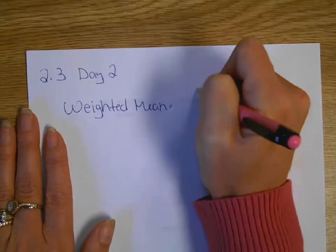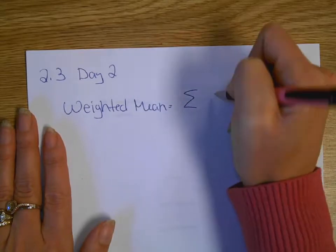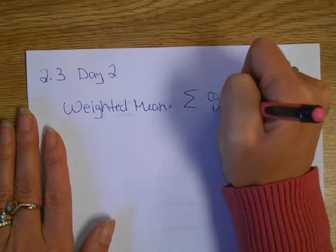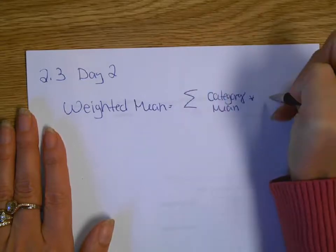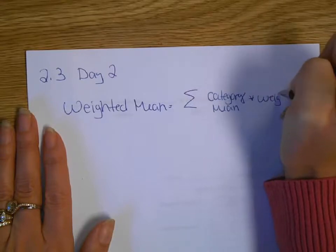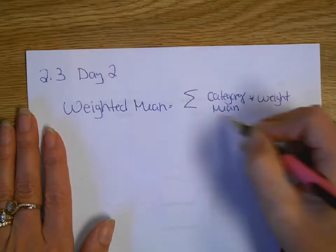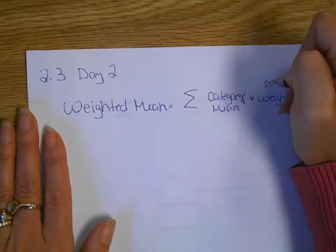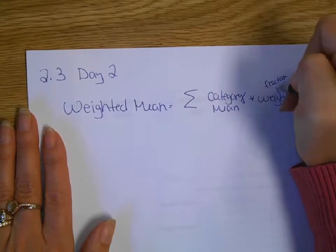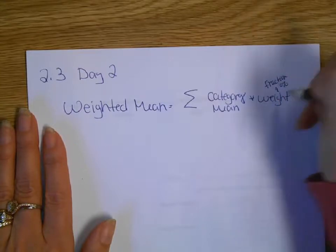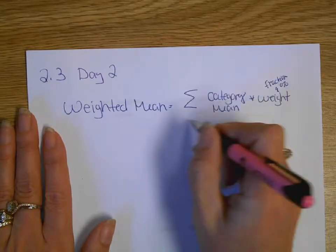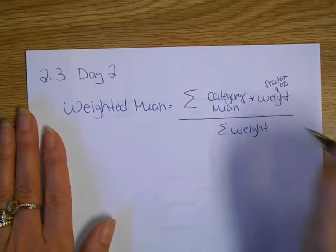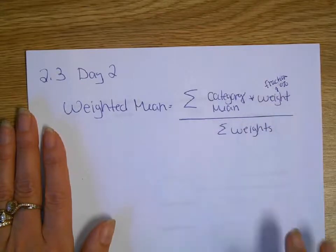And remember, it's just the sum of each category's average, the category mean, multiplied by its corresponding weight. What fraction, or what percent of the total grade is the weight. A percent, that's your weight. And then you divide by the sum of the weights. And you saw yesterday that usually everybody has their weights add up to 100%.